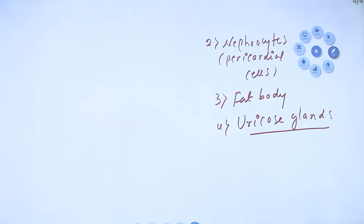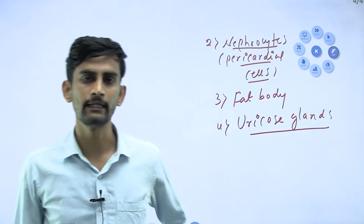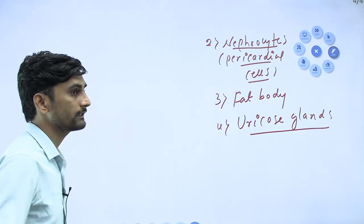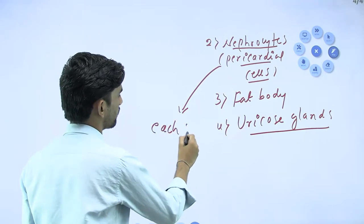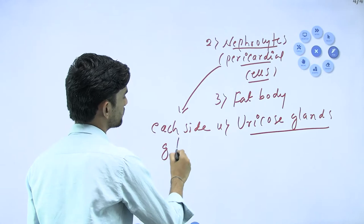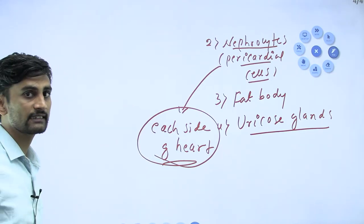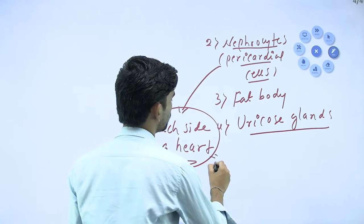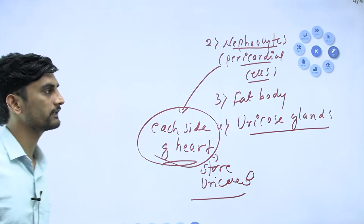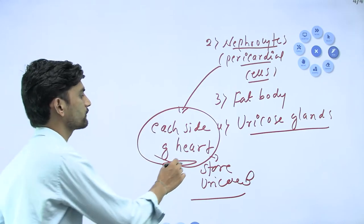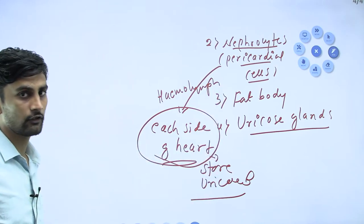Nephrocytes, also called pericardial cells, are present on each side of the heart. The cockroach heart has 13 chambers, and on each side you find nephrocytes. These nephrocytes absorb and store uric acid from the hemolymph. They will also absorb metabolic waste from the hemolymph and store it.